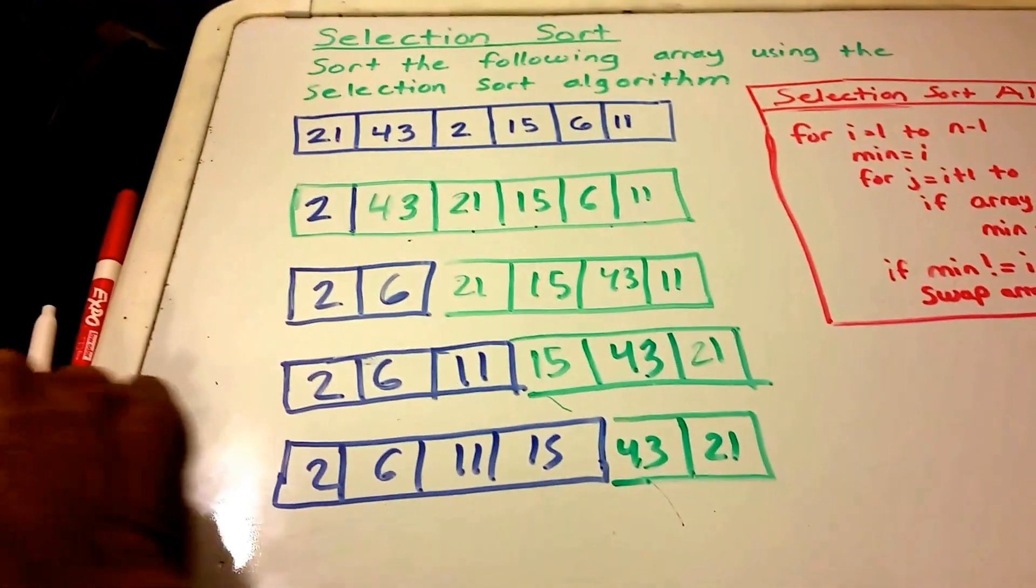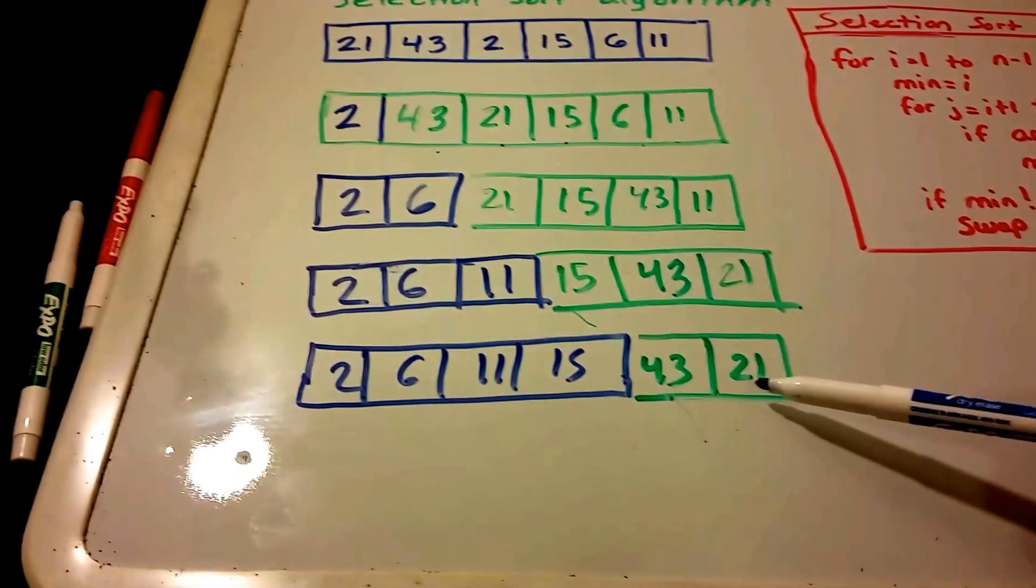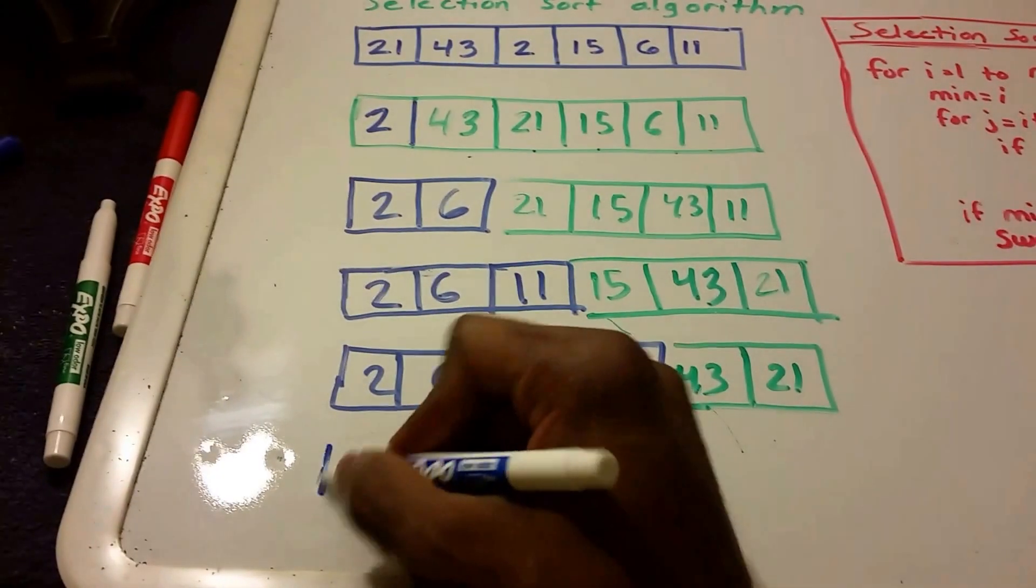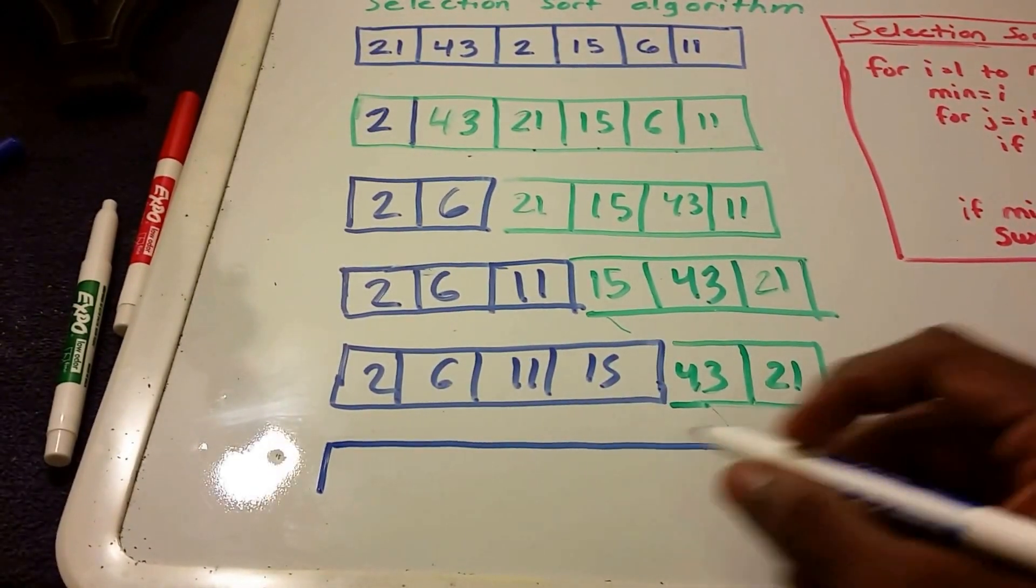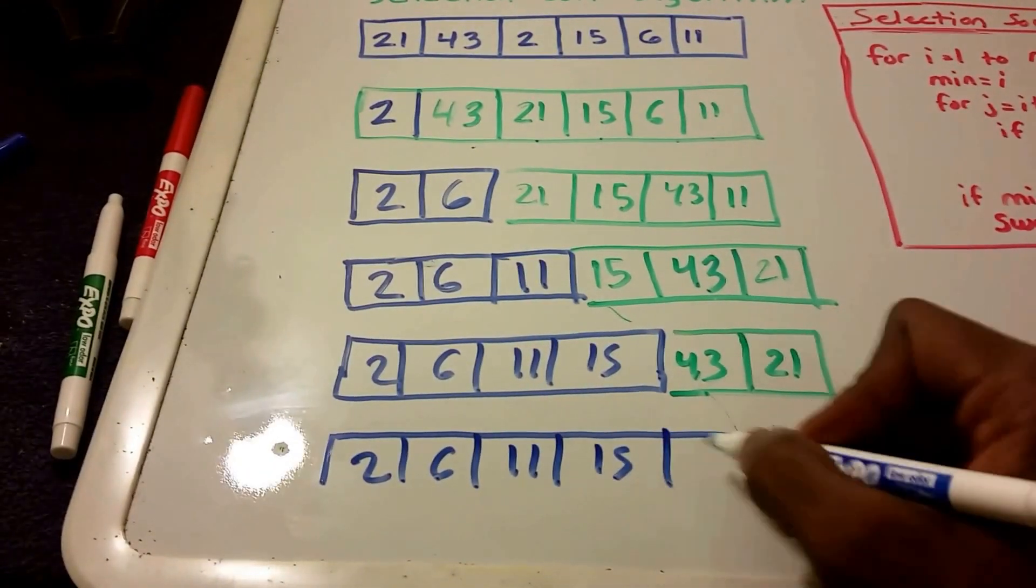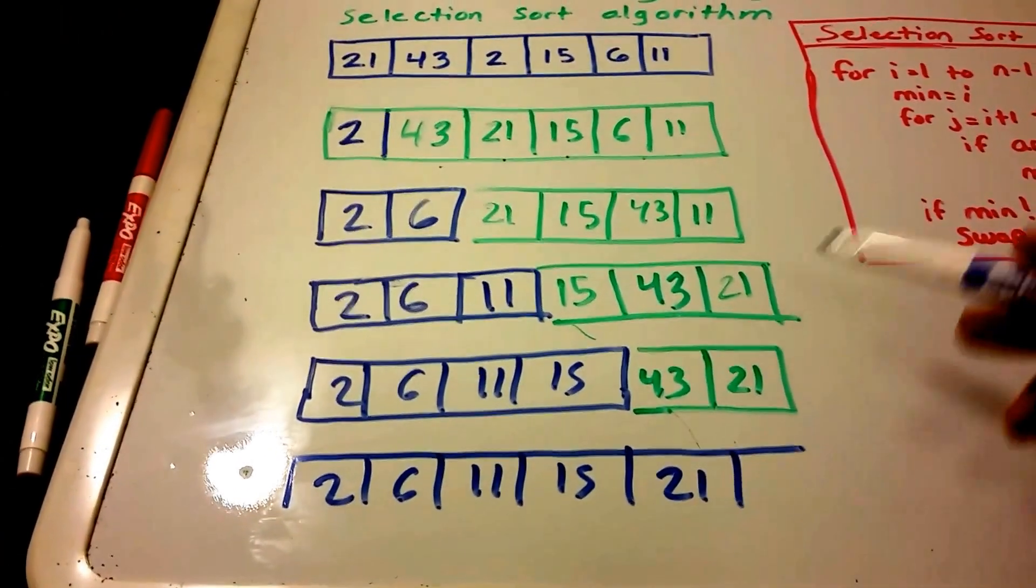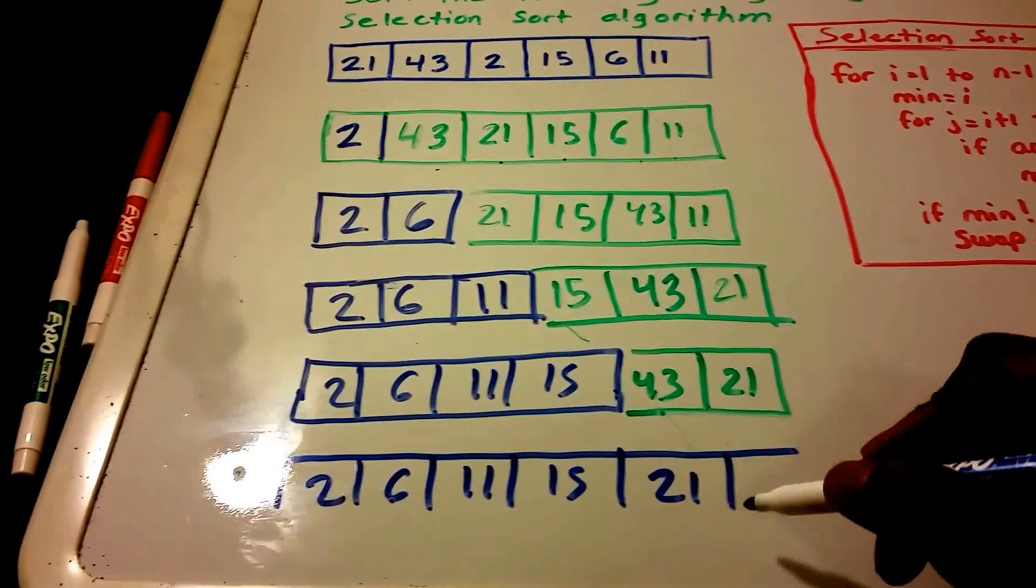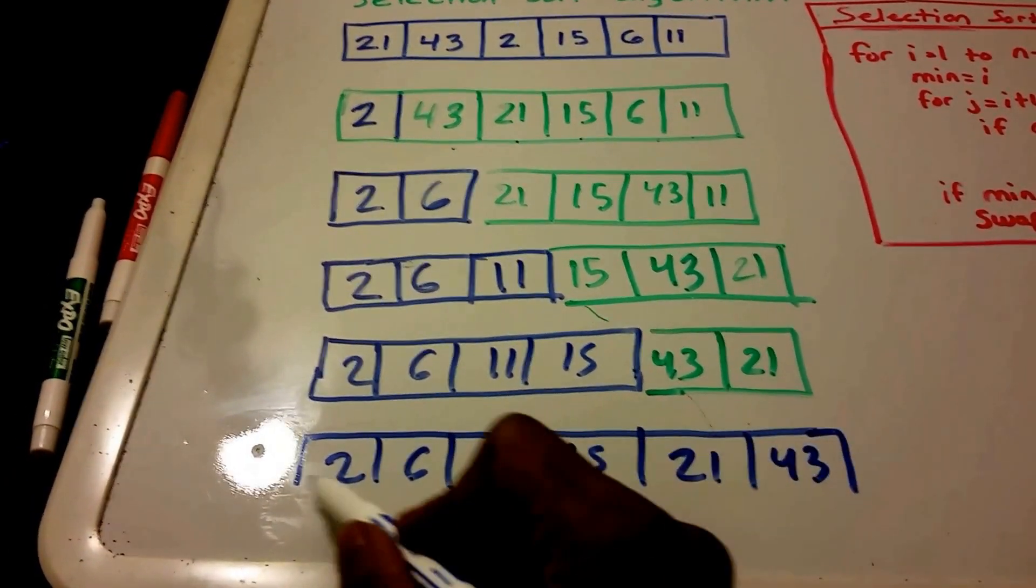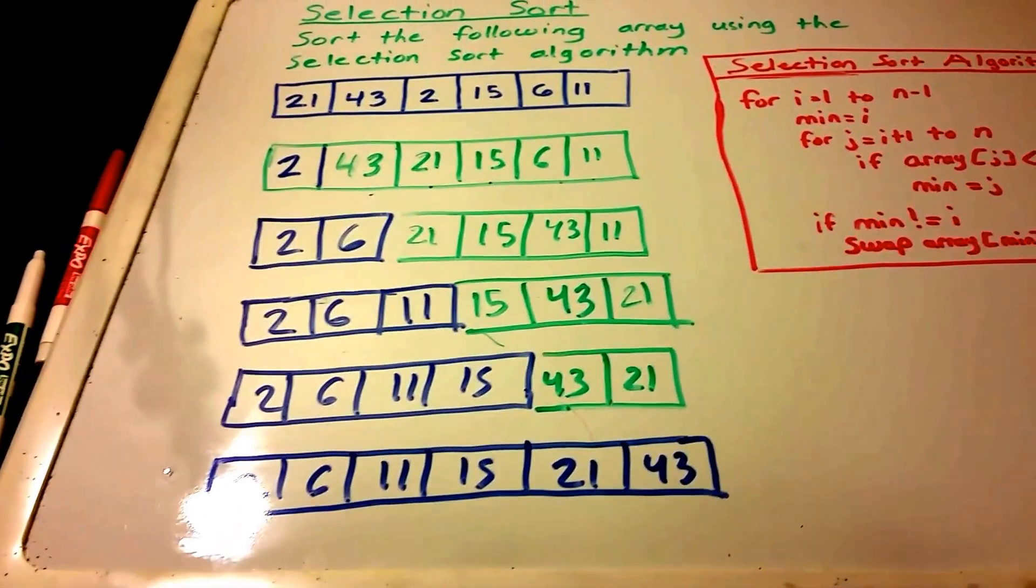So now we are here at 43. And we check to see if 43 is less than 21. And it's not. So we have to swap 21 and 43. So we get 2, 6, 11, 15, 21. And because our algorithm only goes to N minus 1, we know that that last element is already sorted. So it's 43. And that's the end of our selection sort algorithm.